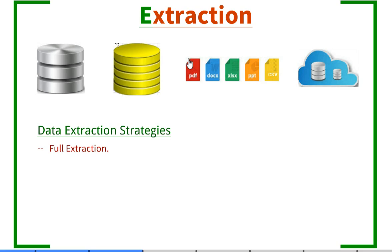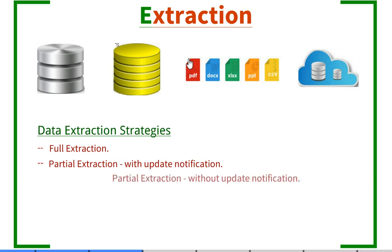In the full extraction strategy, we extract all the data from the source systems into a staging server. Next is partial extraction with update notification, where sometimes we get a notification from the source systems indicating which data has been updated, deleted, or is new. This is also called the Delta. In this strategy we only extract the data which has been modified, and it is easier and quicker compared to full extraction. The next strategy is partial extraction without update indication, where we extract data based on certain keys or strategies.